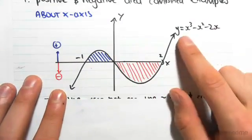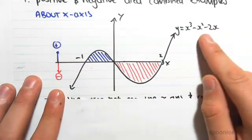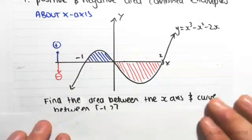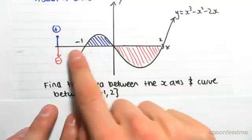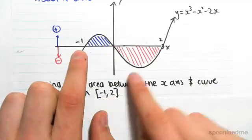We are given this curve, y equals x cubed minus x squared minus 2x, and we've been asked to find the area between the x-axis and the curve between minus 1 and 2.